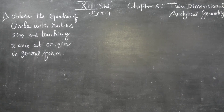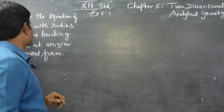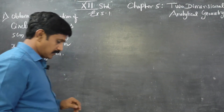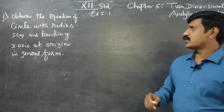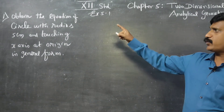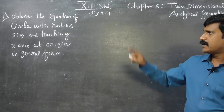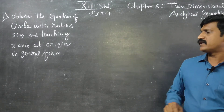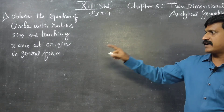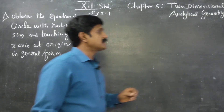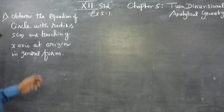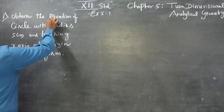Dear 12th standard students, in chapter number 5, two-dimensional analytical geometry, section 5.1, we are going to see circles. The problem asks us to obtain the equation of the circle with radius 5 cm and touching the x-axis at the origin in general form.